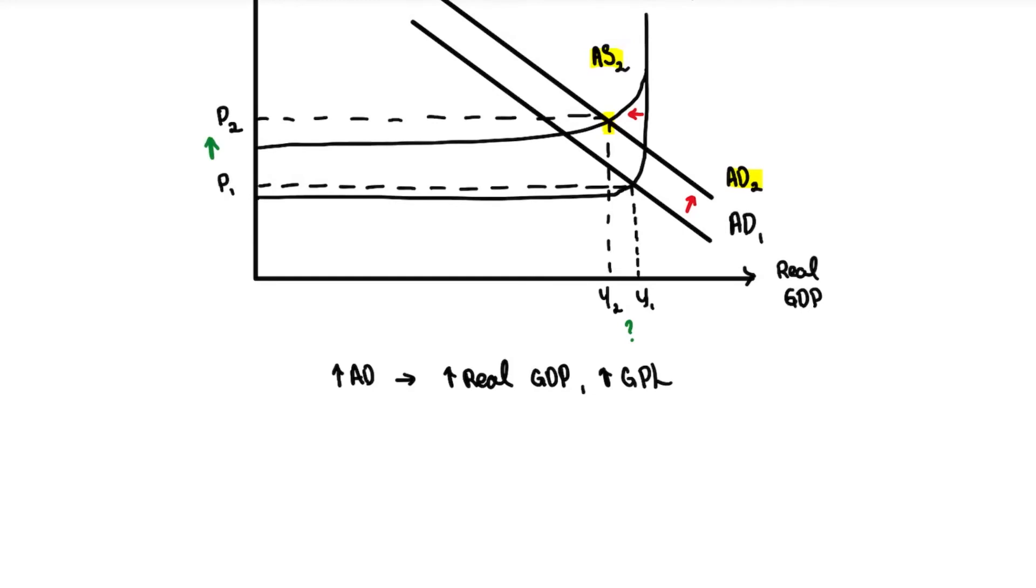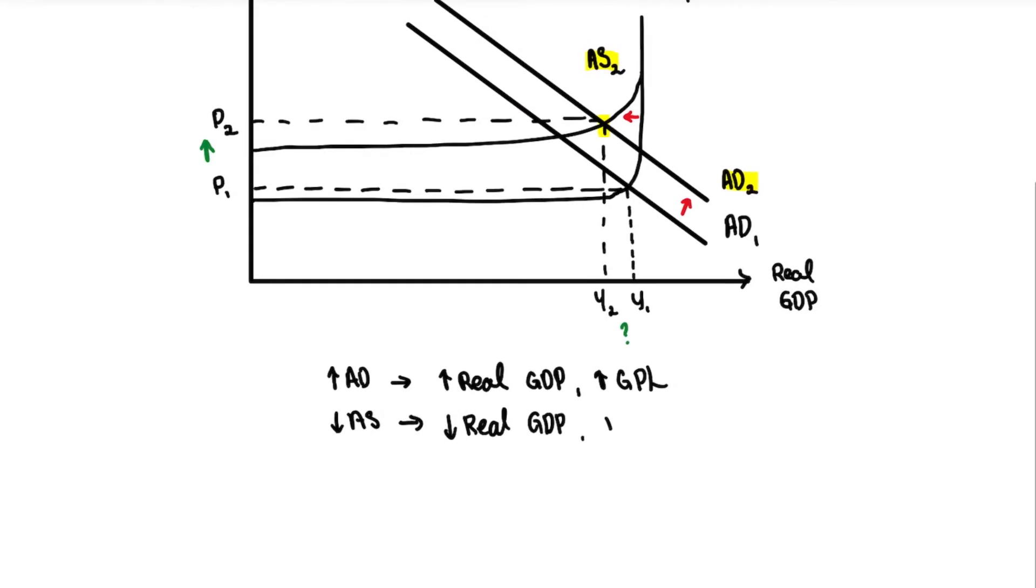And likewise, if there is a fall in AS—this is basically similar to your demand supply—a fall in AS means you would actually have a decrease in real GDP and an increase in your general price level.